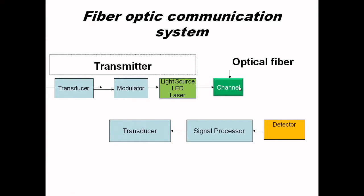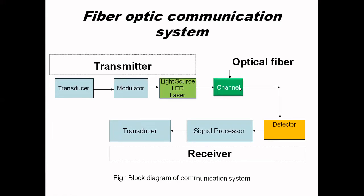This is a fiber optics communication system, which was my last topic. I already explained optical fiber through which light propagates from the transmitter to the receiver. My last lecture was about optical fiber — the different types, different concepts like total internal reflection, numerical aperture, and cone of acceptance. The whole lecture was for that channel only.